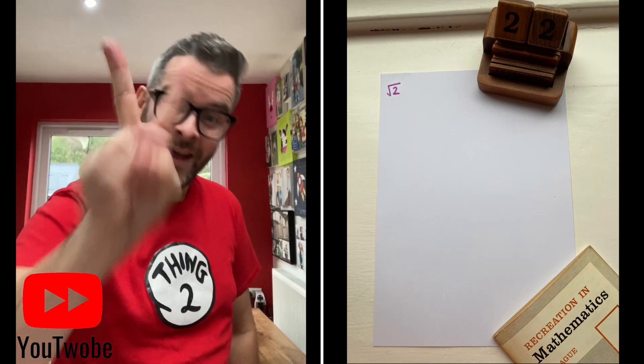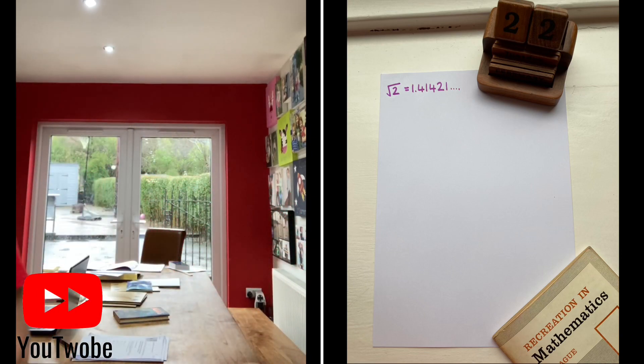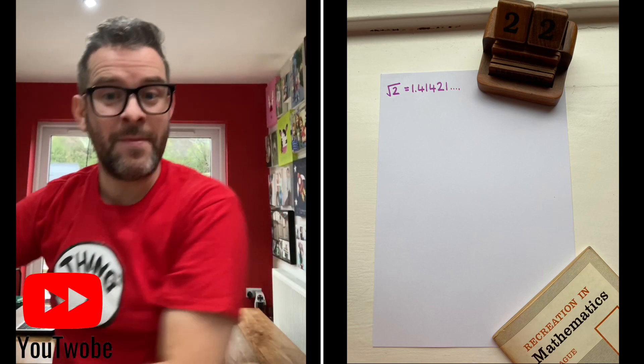When you're celebrating Twosday, there really is only one square root that you should be looking at, and that's the square root of 2, which starts 1.41421 and then it keeps going. We're not going to bother about all of them, all we're going to focus on is the 1.4. We're forgetting about the rest for now.